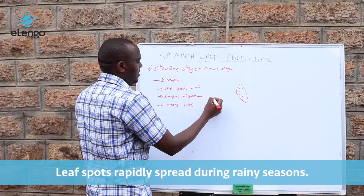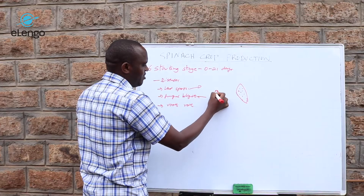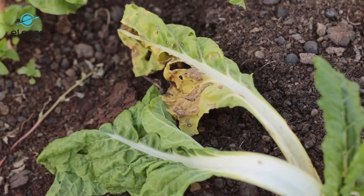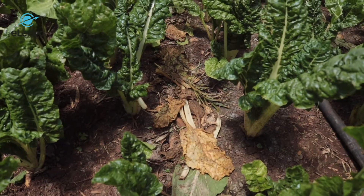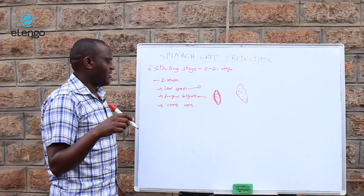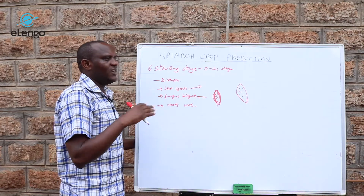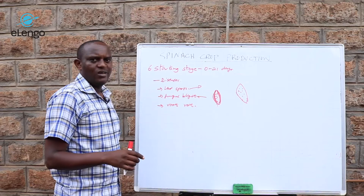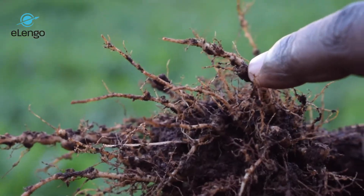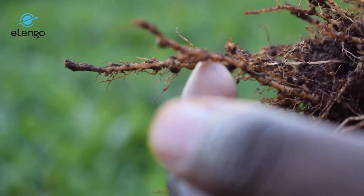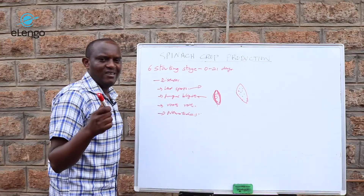When looking at fungal blight, you will find the margins of the leaf are drying off until the whole leaf dries up — that is what we call fungal blight. For root rot, you find that the roots of a young plant start rotting and the plant dies off instead of thriving. Apart from root rot, we also have nematodes, which still attack young plants.